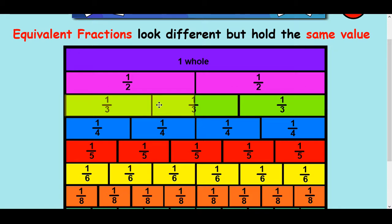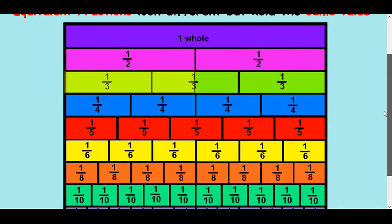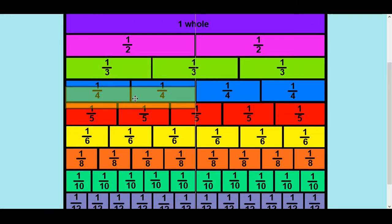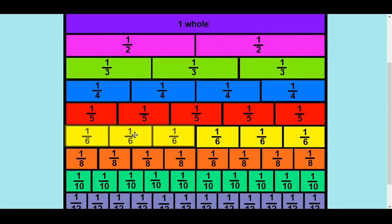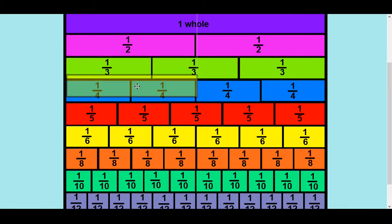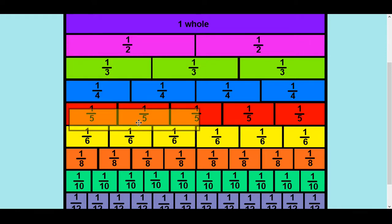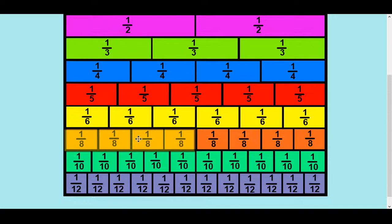There are other equivalent fractions as well — if you want to pause the video you can have a think about them. Looking at the half, we've seen two-quarters. Three-sixths is the same as a half, and two-quarters. So you could say two-quarters is the same as three-sixths, which is the same as one-half, and that is the same size as four-eighths, and the same as five-tenths, and six-twelfths.